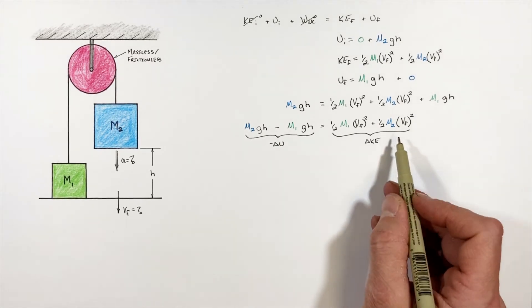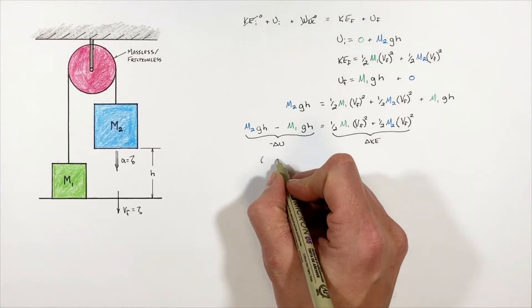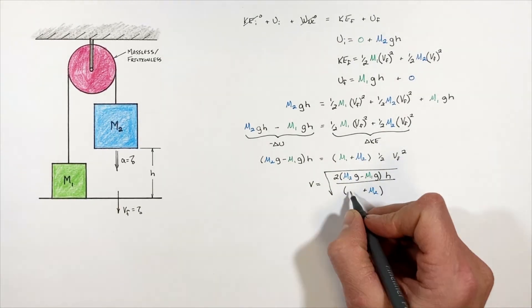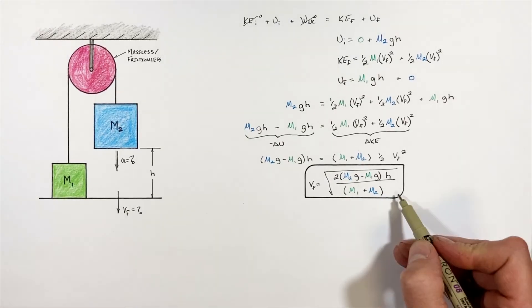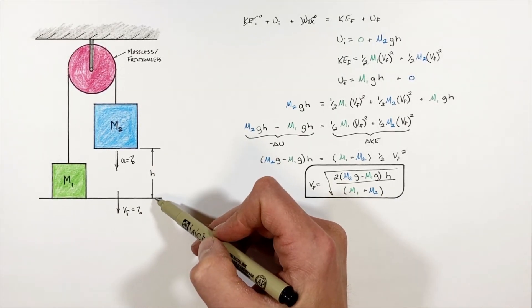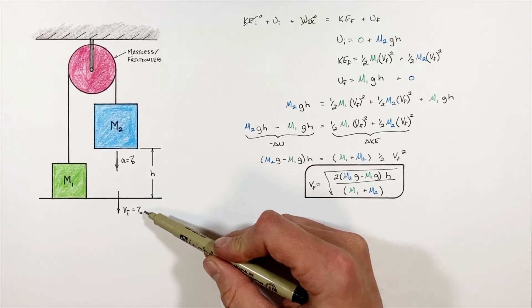And at this point we can simply rearrange this equation for Vf. And we're left with this expression relating the final velocity to the masses as well as the height over which this block moved downward. So having found the final velocity, let's back up and solve for the acceleration of this system.